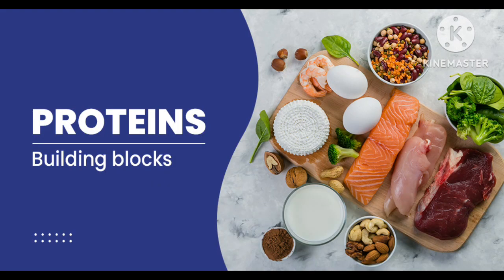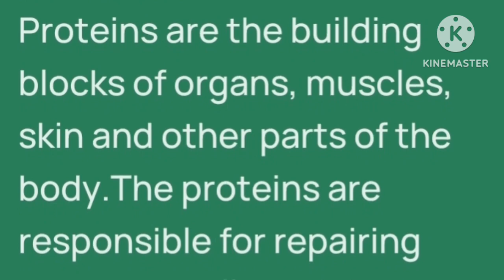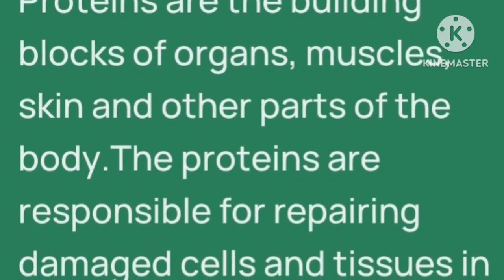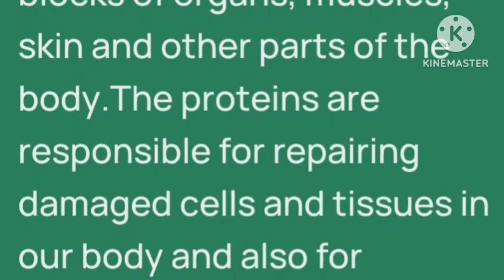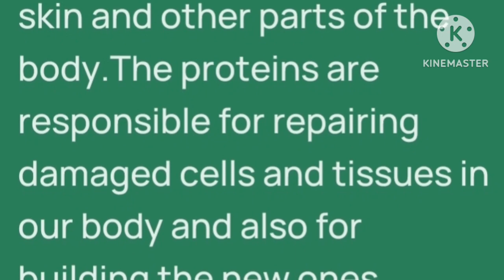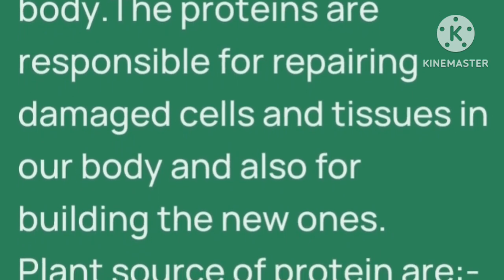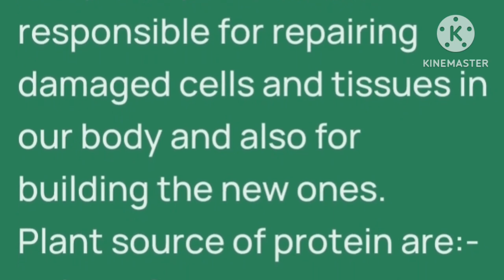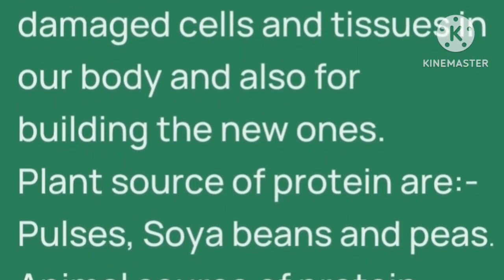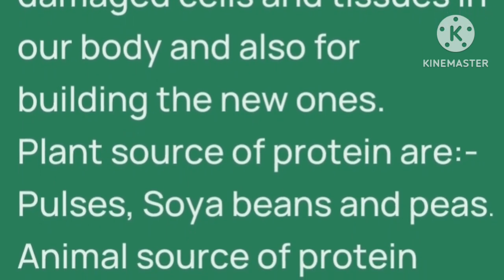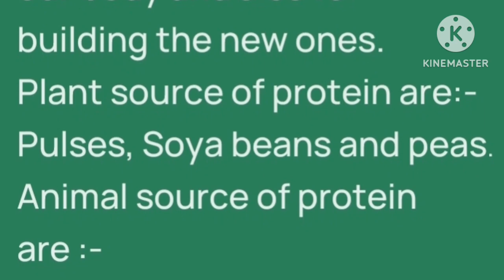Eight number: protein. Proteins are the building blocks of organs, muscles, skin and other parts of the body. Proteins को हम building blocks कहते हैं organs, muscles और skin का. The proteins are responsible for repairing damaged cells and tissues, and also for building new ones. Some plant sources of protein are pulses, soya beans and peas. And animal sources of proteins are milk, egg and fish.